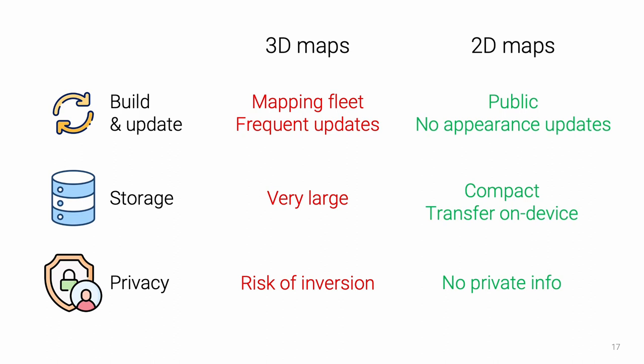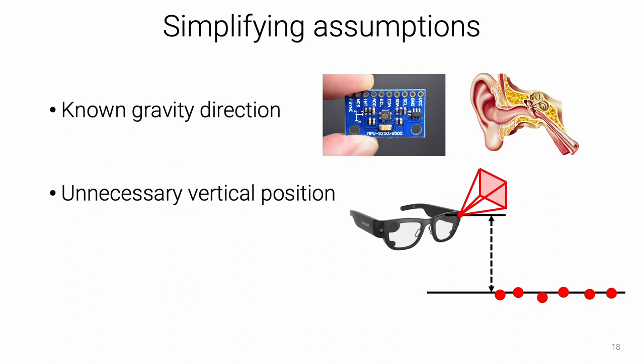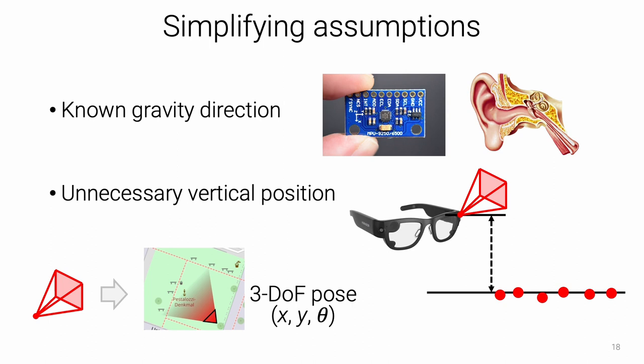How can we localize in 3D using 2D maps? Well, in practice, the gravity direction is often measured by inertial sensors that are ubiquitous in today's devices — it's like the inner ear of humans. Additionally, the vertical position of the camera is often irrelevant because motions in outdoor spaces are mostly horizontal. Since these devices often compute a local 3D map for tracking, the height can anyway be estimated as the distance to the ground. These assumptions overall reduce the problem to estimating a much simpler 3-degree-of-freedom pose as 2D position and heading angle.